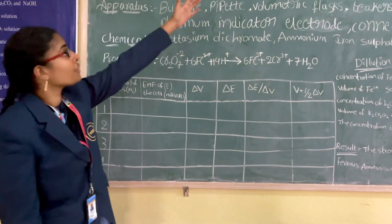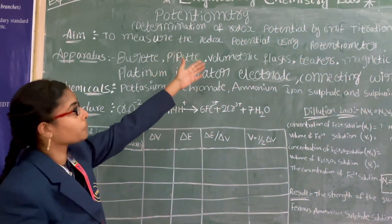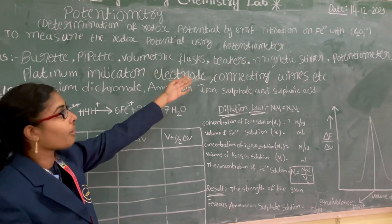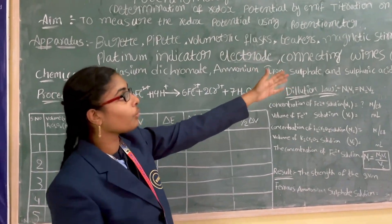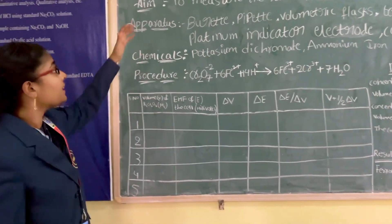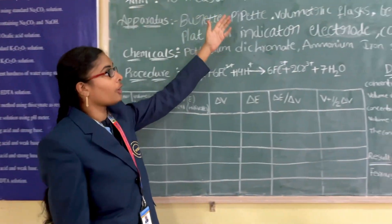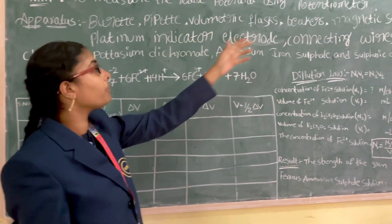Back to discussing the potentiometer - determination of redox potential by EMF titration of Fe2+ versus Cr2O7 2-. The aim is to measure the redox potential using potentiometer.